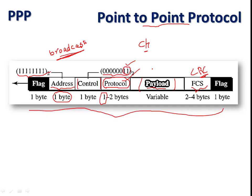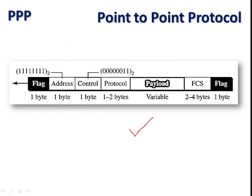When dealing with character-oriented frames, byte stuffing is required. Byte stuffing is done when a pattern similar to the flag byte appears within the data. An extra byte is inserted so that the receiver does not mistakenly interpret it as the end of the frame. When the frame reaches the receiver side, the receiver removes the extra byte and continues reading the next byte as actual data, not as an end flag.